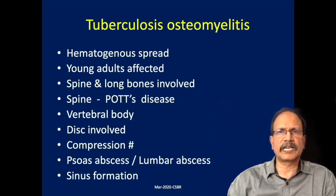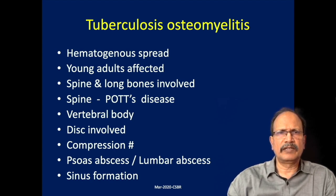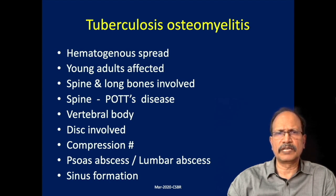Tuberculosis osteomyelitis is always secondary tuberculosis. It spreads through hematogenous spread, and young adults are affected. The spine and long bones are commonly involved in this process.